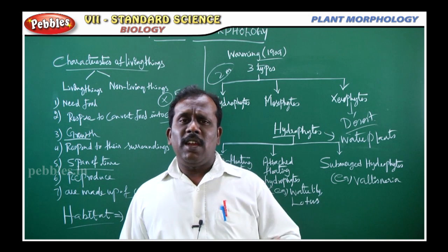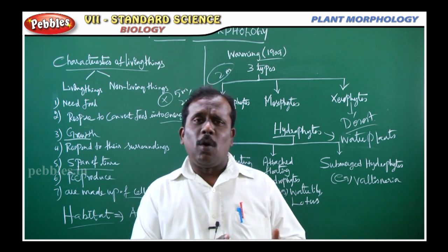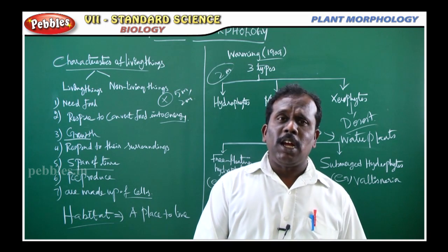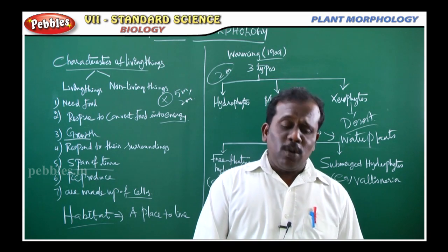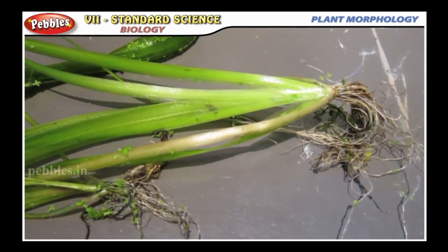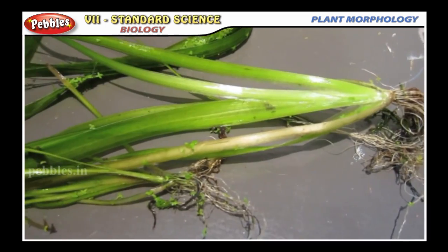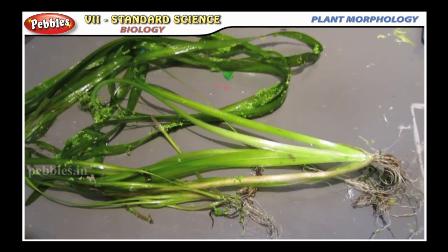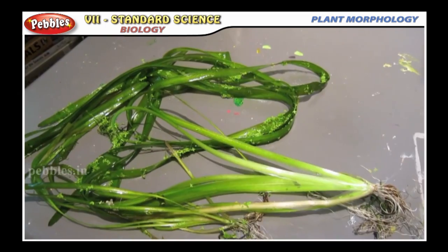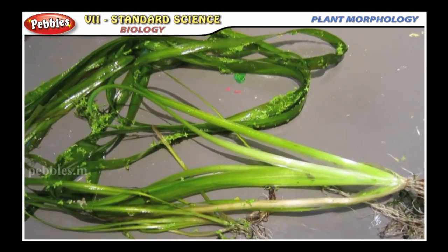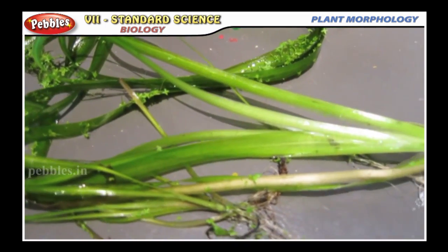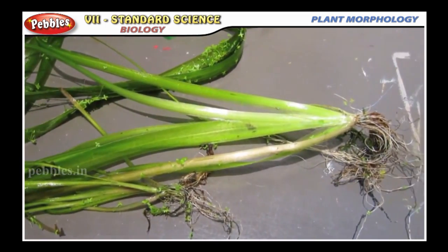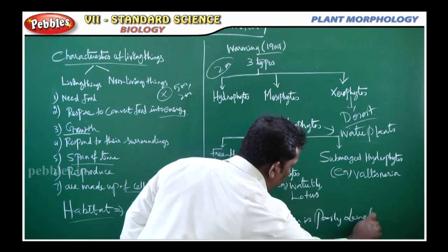Why are these plants adapted to live in water? First point: the root system is poorly developed. The root system is poorly developed.